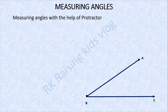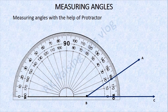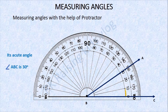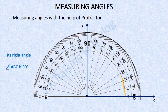Do you know how to measure angles? We measure or draw angles with the help of a protractor. Let me show you. Here is the protractor. Can you tell me how much degrees this angle is measuring and what kind of angle it is? It's an acute angle — it's measuring 30 degrees. This is how we measure angles with a protractor. Next: what kind of angle is this? It is a right angle, measuring exactly 90 degrees. The angle ABC is 90 degrees.